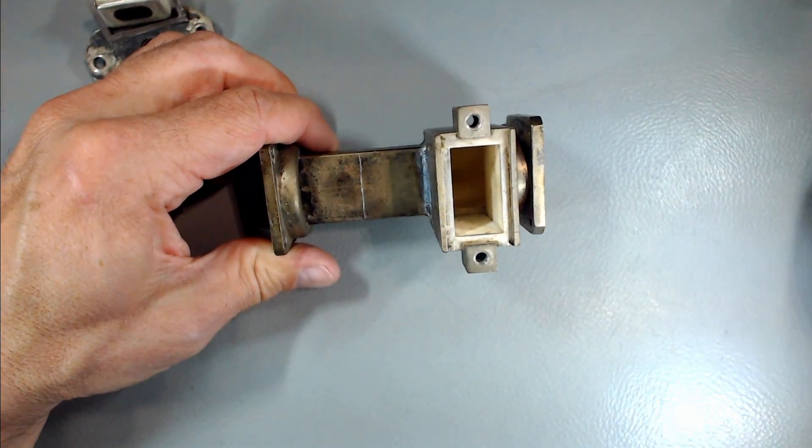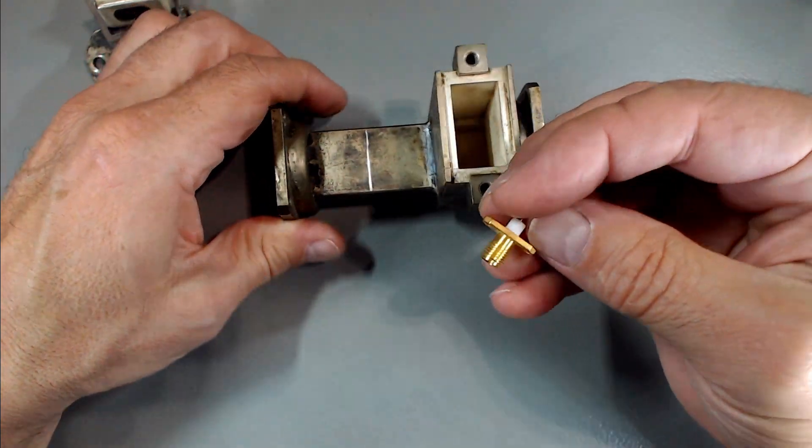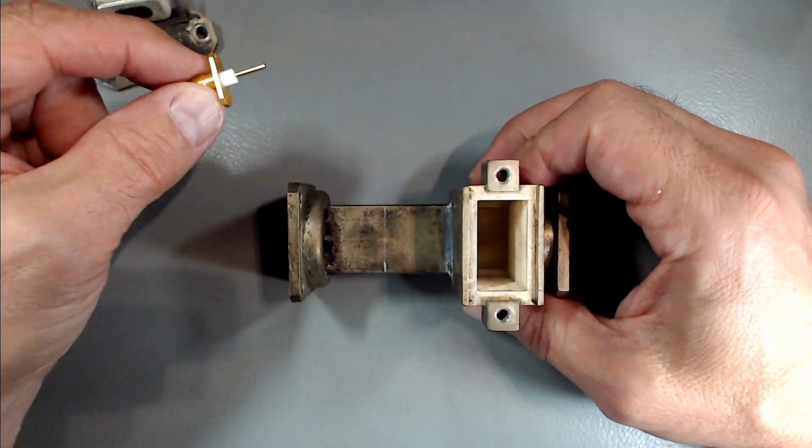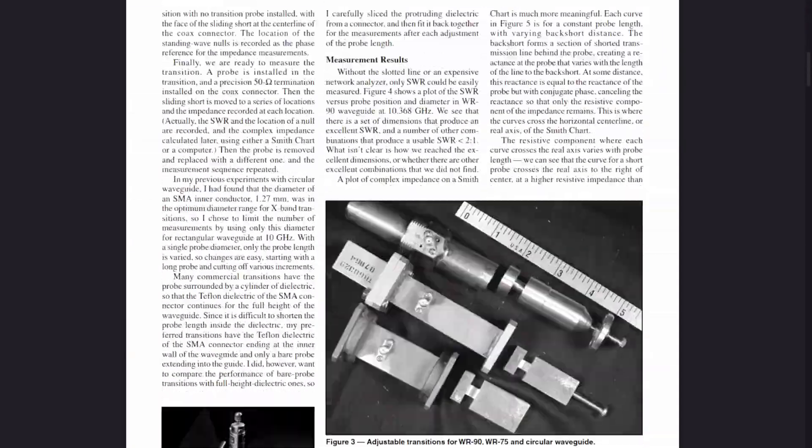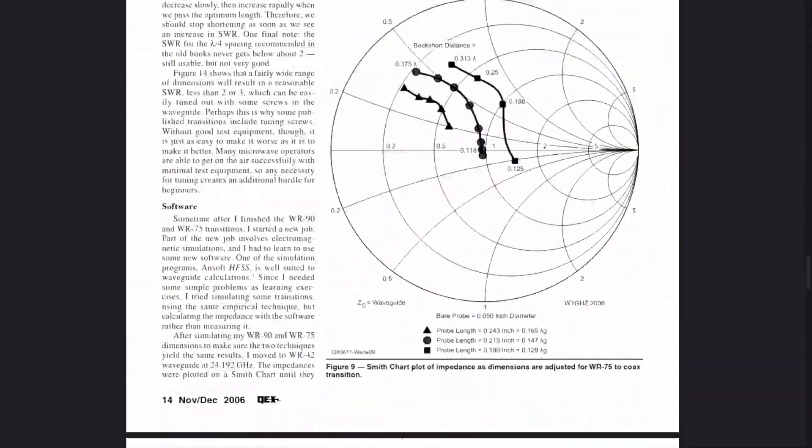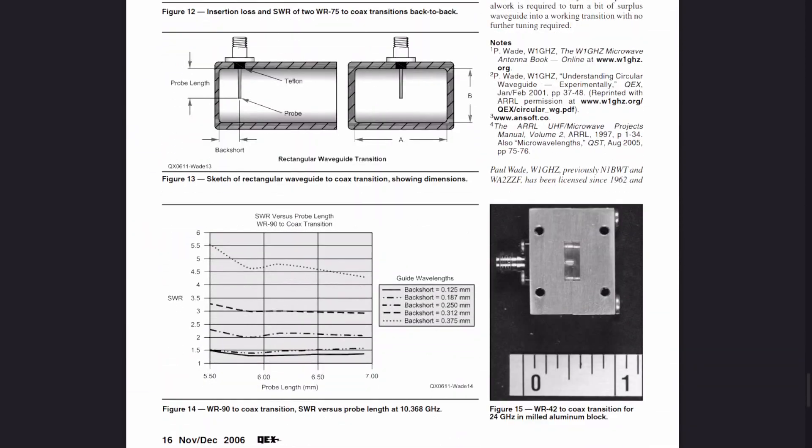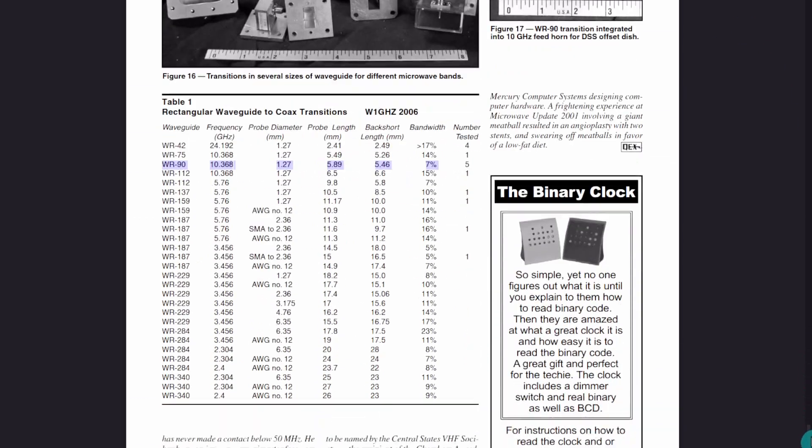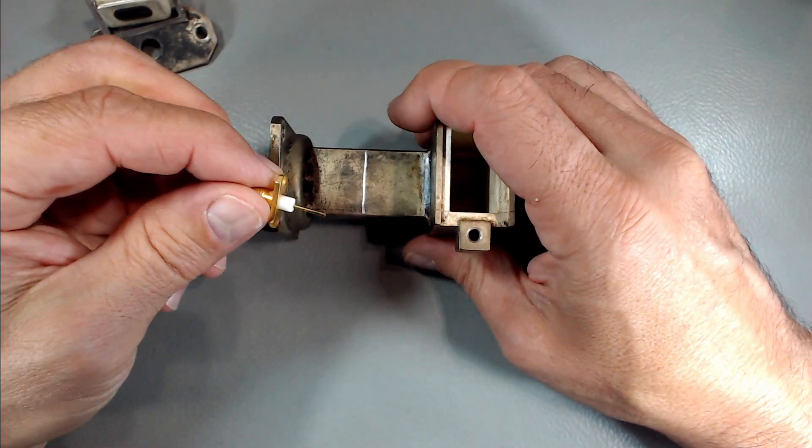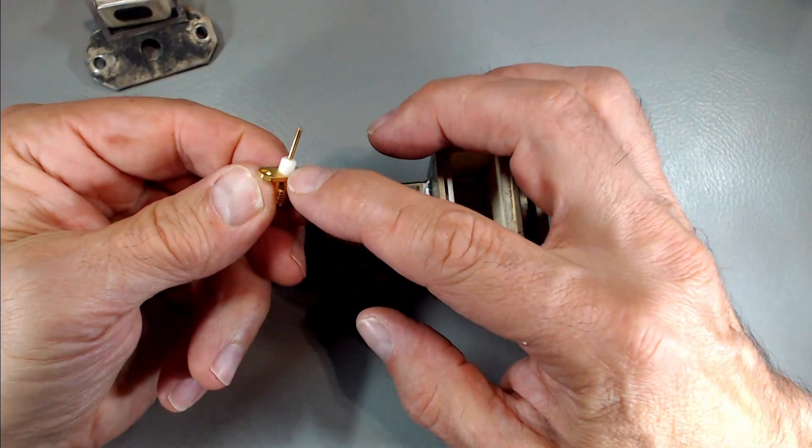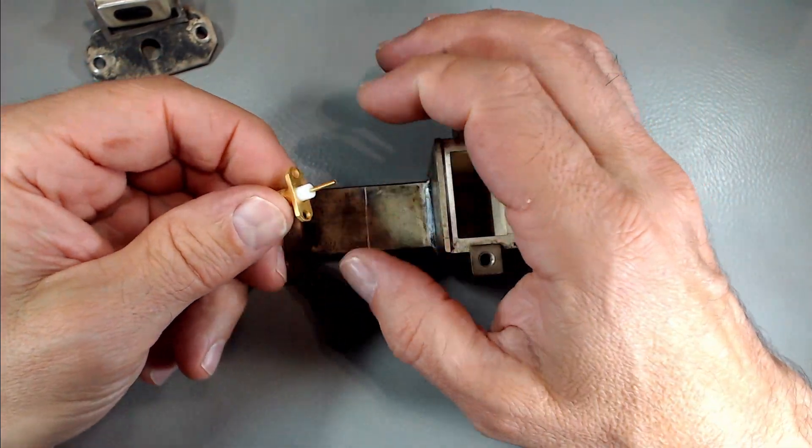As far as the probe goes, this is what I intend to use and here's why. There's a paper that was written by W1GHZ from 2006 that really detailed how to make your own transition from waveguide to coaxial. If you look at what he used, the probe dimensions are exactly what I have here - it's 50 thousandths of an inch wide. That will work perfectly well. It's got some Teflon like what he's specifying.